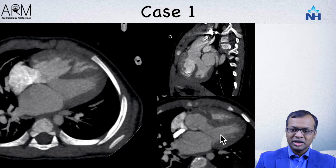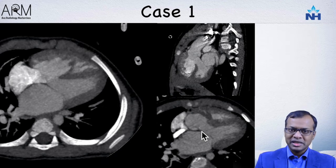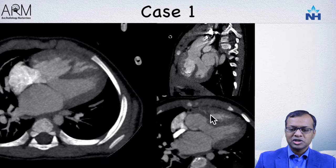In another image you can see the LV connecting to the aorta, and the mitral valve and aortic valve have a common insertion point — termed aortomitral continuity. When you see this, you are not worried about DORV (double outlet right ventricle). If the aorta and mitral valve do not have this continuity, then the aorta is most likely arising fully from the right ventricle.